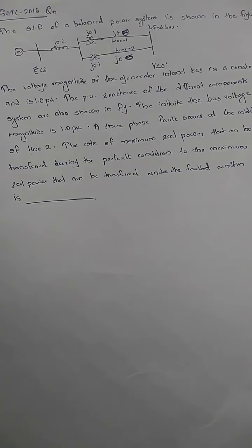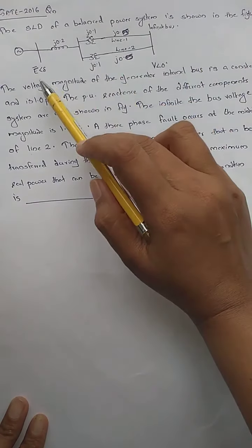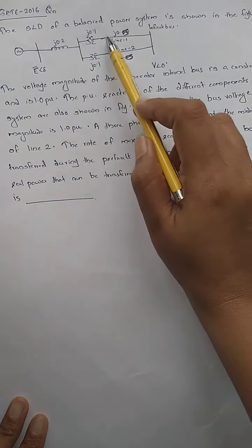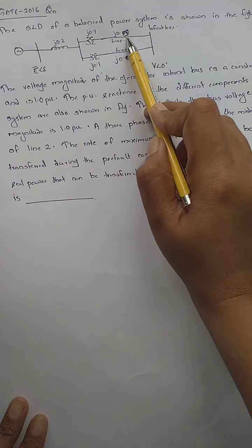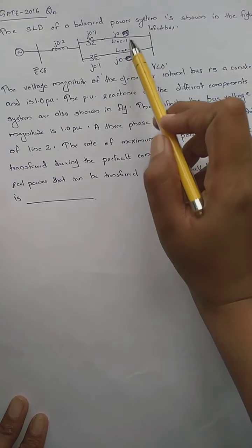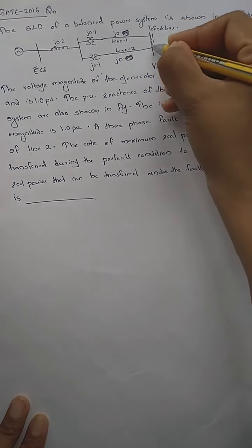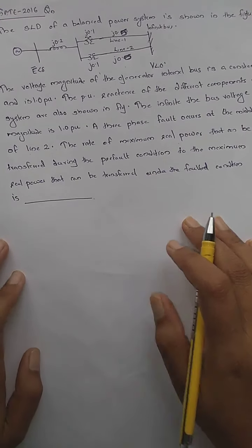Hello, in this video I am solving a GATE question that was asked in 2016. A single line diagram of a balanced power system is shown. The reactance values are: 0.2 here, 0.1 for the transformer, and 0.5 and 0.5 for line 1 and line 2, and it is connected to the infinite bus bar.